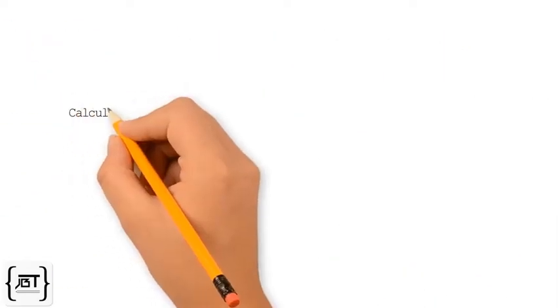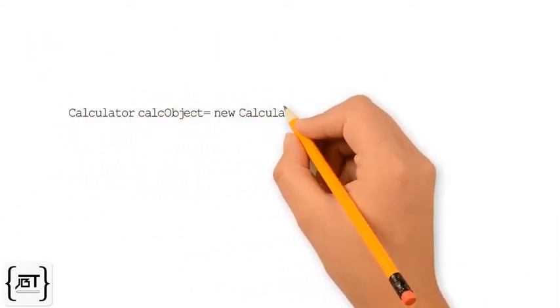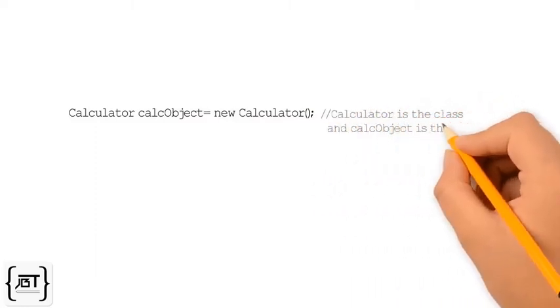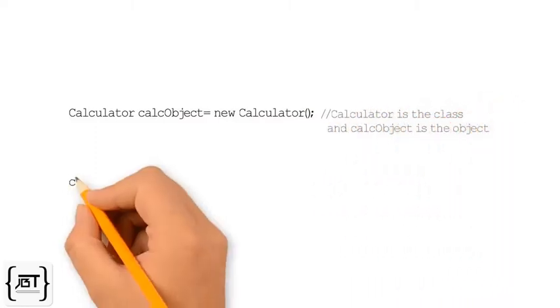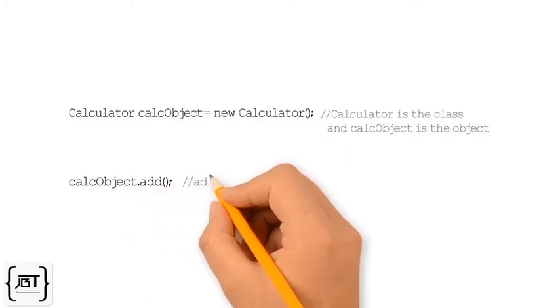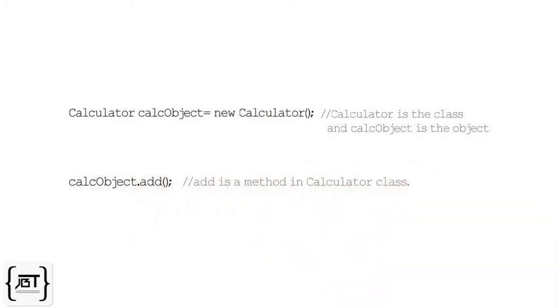Given a class calculator, we can construct an object of the class by using the new operator. We can call methods on the object by using the dot operator like this.